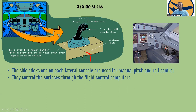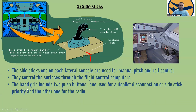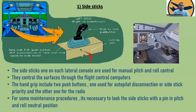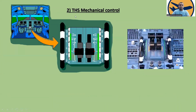The side sticks control the surfaces through the flight control computers — they control the servos through the flight control computers. The hand grip includes two push buttons: one for autopilot disconnection or side stick priority, and the other for radio. For some maintenance procedures, it is necessary to lock the side sticks with a pin in pitch and roll neutral position.